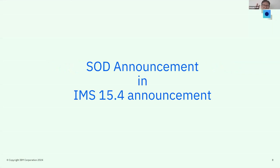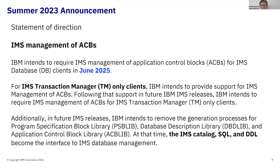The first thing you may or may not know is that IMS 15.4 came out last year. By the way, we just made 15.5 GA. When 15.4 came out last year, we put out an SOD — a statement of direction. IBM intends to require IMS management of ACBs for IMS DB clients in June of 2025. So by the summer of 2025, we will be requiring that you implement IMS managed ACBs.